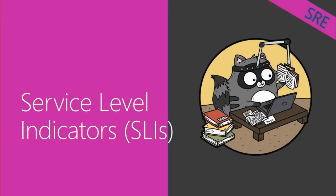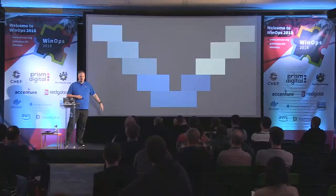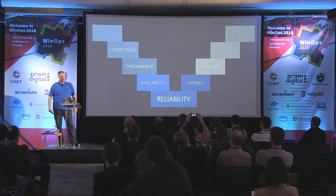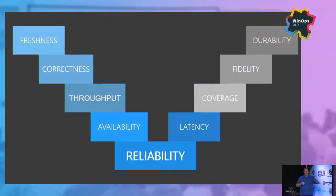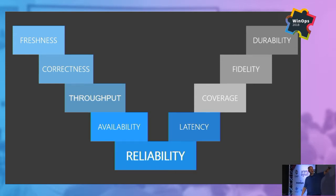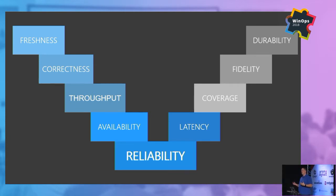What is that data that we're getting? It's service level indicators. Service level indicators are metrics that we have converted into some sort of percentage. In order to think about what things I might turn into service level indicators, there are a couple of ideas. As you're deciding what metrics matter and what are the objectives we're trying to reach, keeping these words in mind helps start to focus on what the things are that we care about.